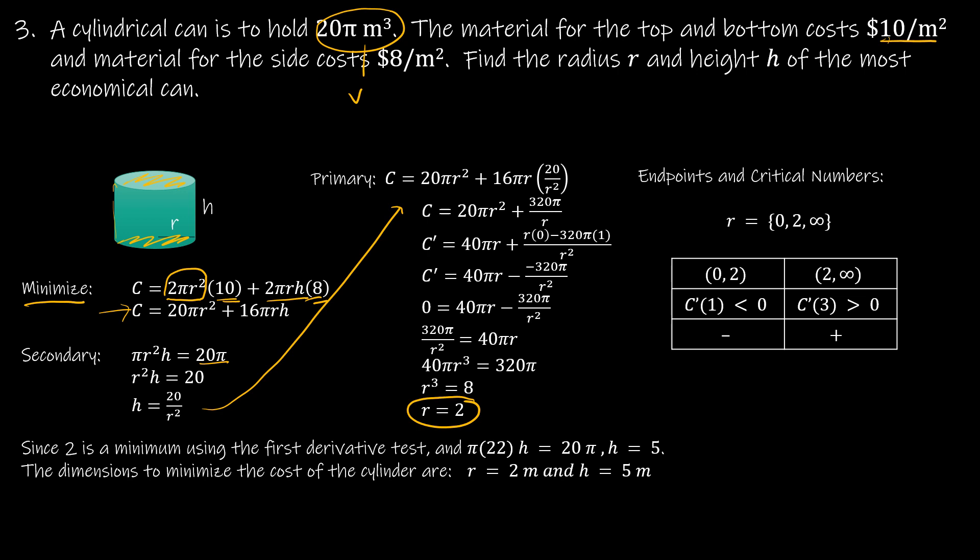I see that based on this, this is obviously a minimum. So 2 is a minimum using the first derivative test. And then I'm plugging that 2 back in to find anything else that I need to know. So I know the dimensions to minimize the cost of the cylinder are a radius of 2 and a height of 5.